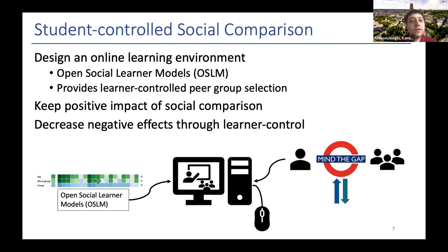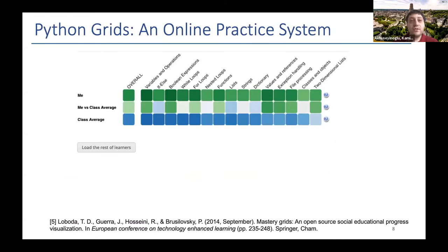We hypothesize that this will keep the positive impact of social comparison and decrease negative effects through learner control. We introduced these new features on a system called Python Grids, an online practice system first introduced at EC-TEL 2014.